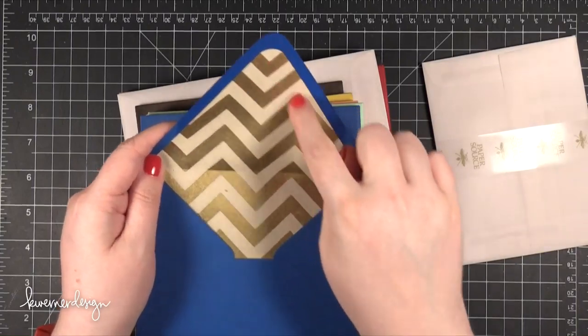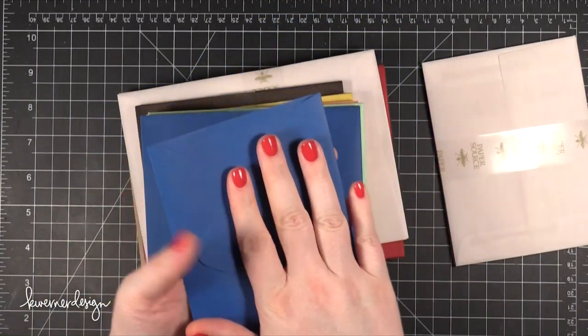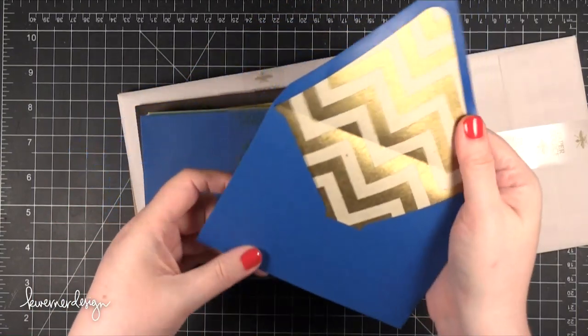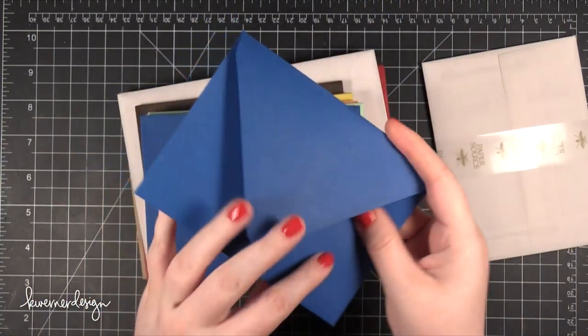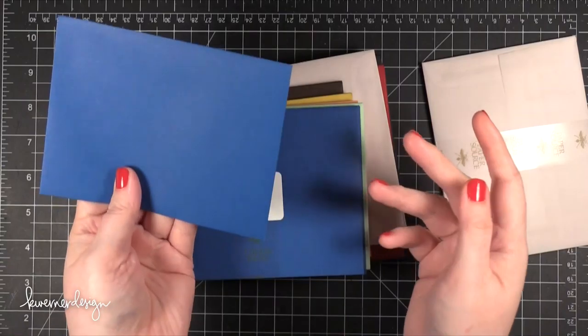And all you do is you slide it in and then fold it down carefully so you have that crease. And then you add adhesive. Hello, I can't talk today. You add adhesive to the liner and then close the envelope and it presses everything down and then you have a really pretty liner inside your envelope. So pretty.